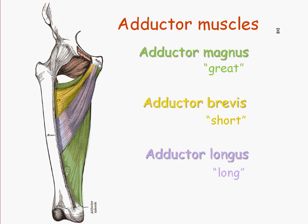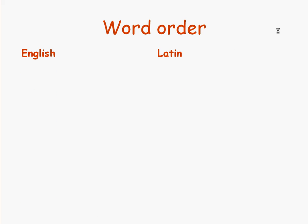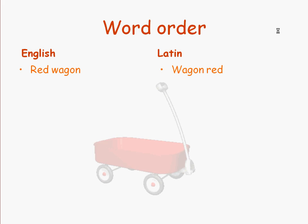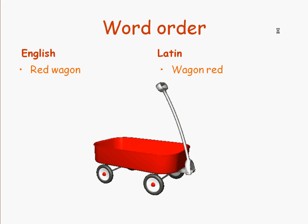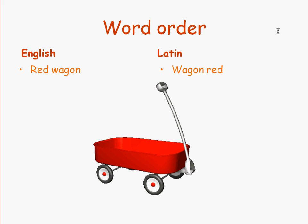One thing about Latin you've probably already noticed is that the words seem to be backwards in the phrase. In English, when we have a phrase like "red wagon," in Latin it would be rendered as "wagon red" instead — using Latin words, not English words, but this shows the word order. So the modifier, which is the adjective (in this case "red"), comes after the term it modifies in Latin, which is backwards from English.